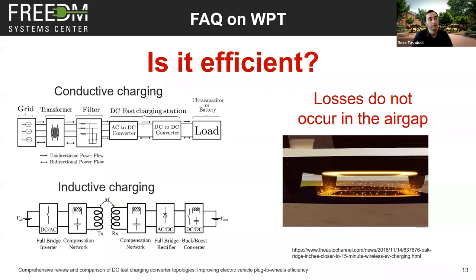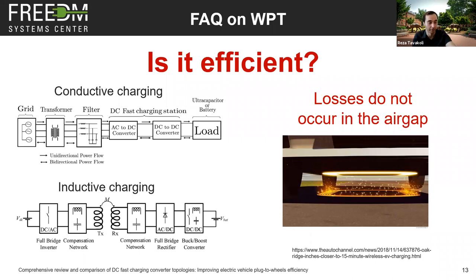Is WPT efficient? A misconception is that because we have an air gap, there must be losses there. But the losses in WPT occur on the same components that exist in both inductive and conductive charging. We are now seeing systems reporting efficiencies of 95% and 97% in WPT, which are very similar to what you can get from a DC fast charger.